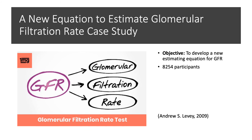Within the study, 8,254 participants were involved in 10 studies forming the equation development data set, and 3,896 participants in 16 different studies formed the validation data set. Prevalent estimates were based on 16,032 participants within the National Health and Nutrition Examination Survey. Measurements used included GFR measured as the clearance of exogenous filtration markers, and linear regression to estimate the logarithm of measured GFR for standardized creatinine levels, sex, race, and age.